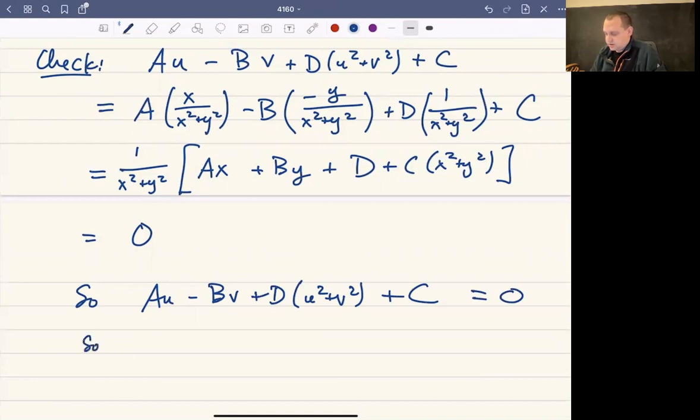So it turns out that this quantity Au - Bv + D(u² + v²) + C is going to be equal to 0. In other words, G(z) is also a line or a circle. So it turns out that inversions also map lines and circles to lines and circles, and therefore so do all the Mobius transformations for the reasons that we laid out above.